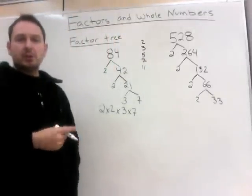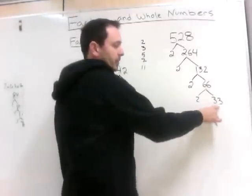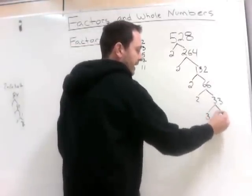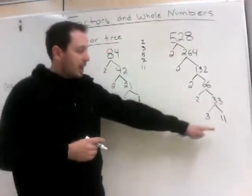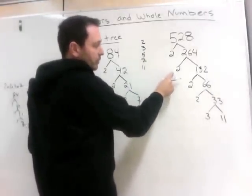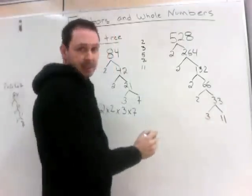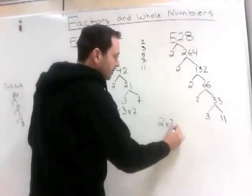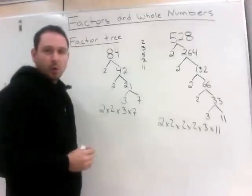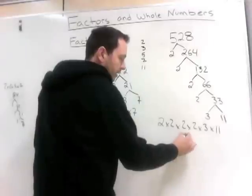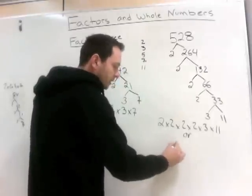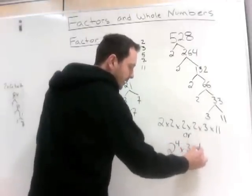We've run out of even numbers, so now we look for 3. 6 plus 6 divided by 3 — since the digits of 66 add to 12, which divides by 3. 66 divided by 3 is 33, and 33 is 3 times 11. I've now completed it because I cannot divide 11 any further; it is a prime number. So the prime factorization is 2 times 2 times 2 times 2 times 3 times 11, or written with exponents: 2 to the power of 4 times 3 times 11.